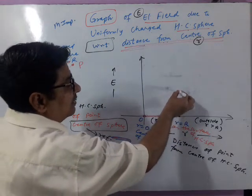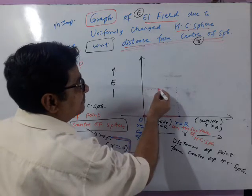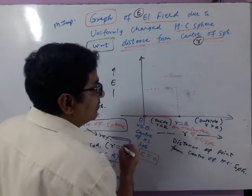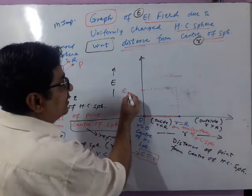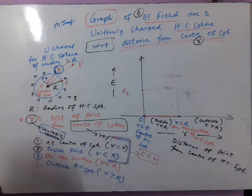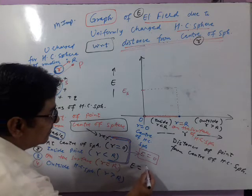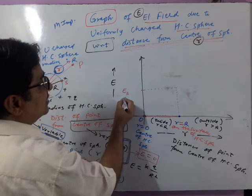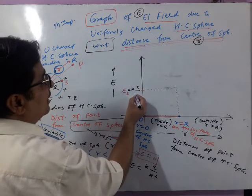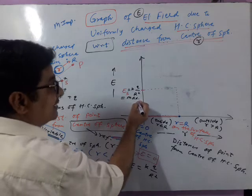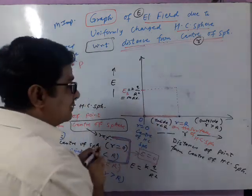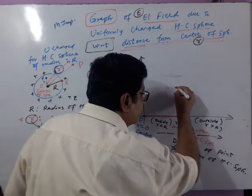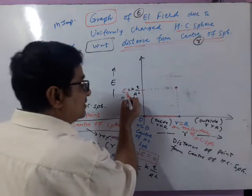When we come to the surface — exactly when small r equals capital R — the electric field is the electric field on the surface, which is kQ divided by capital R squared. This is the maxima value of the electric field, occurring exactly at small r equal to capital R.